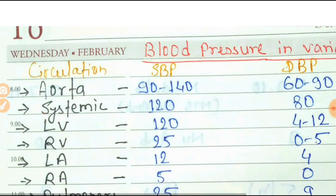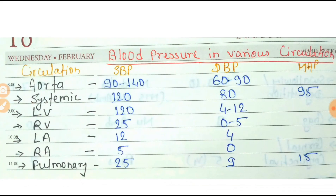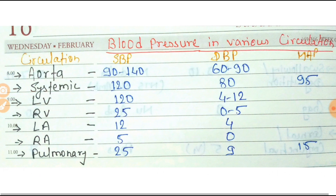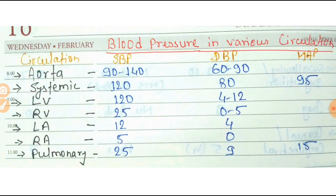Next is blood pressure in various circulations. Starting with the right atrium: systolic blood pressure is 5 mm of Hg while diastolic pressure is 0. For the right ventricle, systolic pressure is 25 mm of Hg while diastolic blood pressure varies from 0 to 5 mm of Hg.